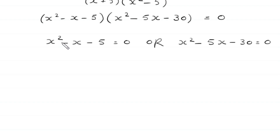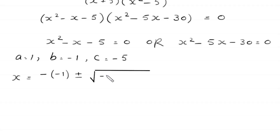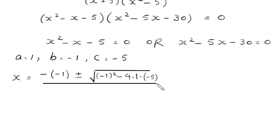In this equation, a is equal to 1, b is equal to negative 1, and c is equal to negative 5. According to the quadratic formula, x is equal to minus b, which is minus negative 1, plus or minus the square root of b squared — negative 1 squared — minus 4 times a times c, which is 1 times negative 5, divided by 2 times a, which is 2 times 1.